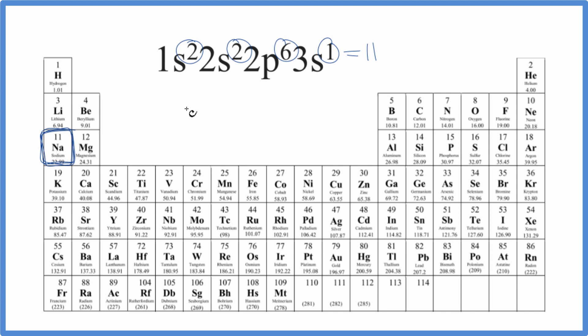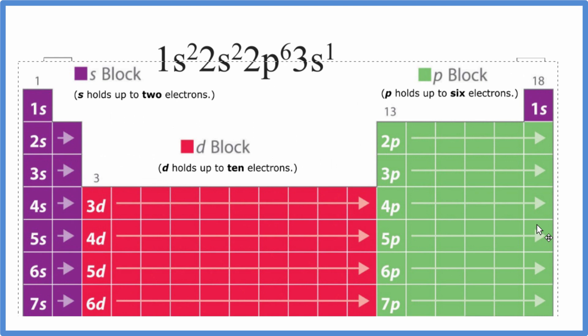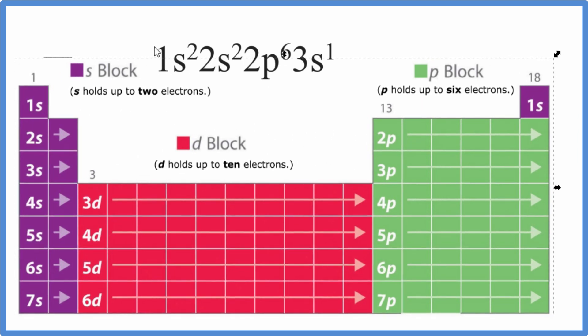There's another way we can do this as well. We can also look at the periodic table divided into orbital blocks. So here we have the periodic table. It's divided into these orbital blocks.